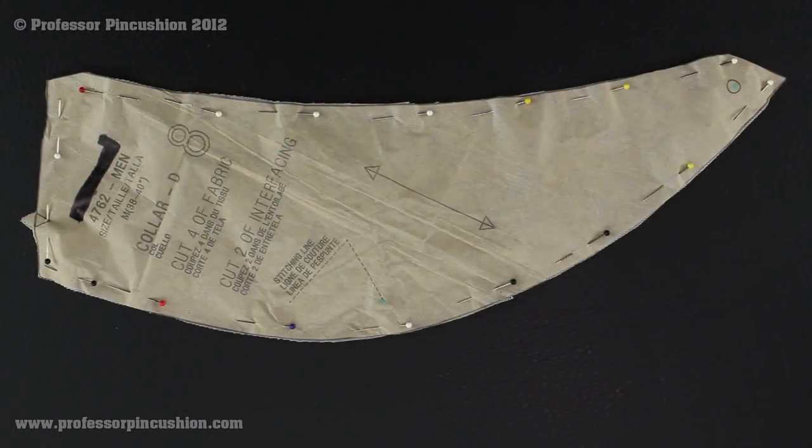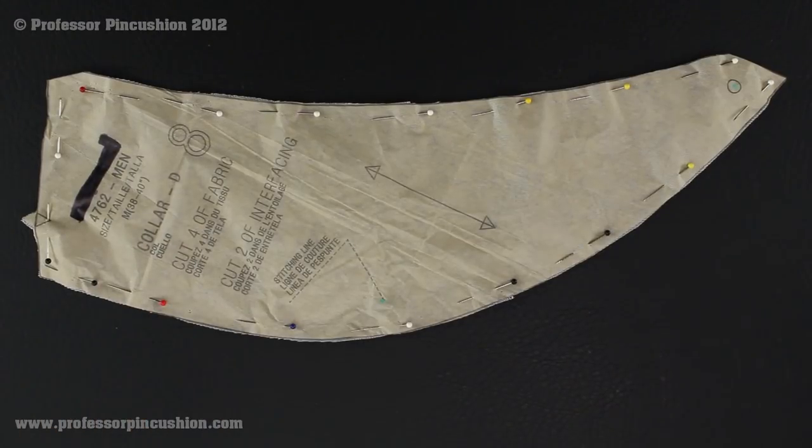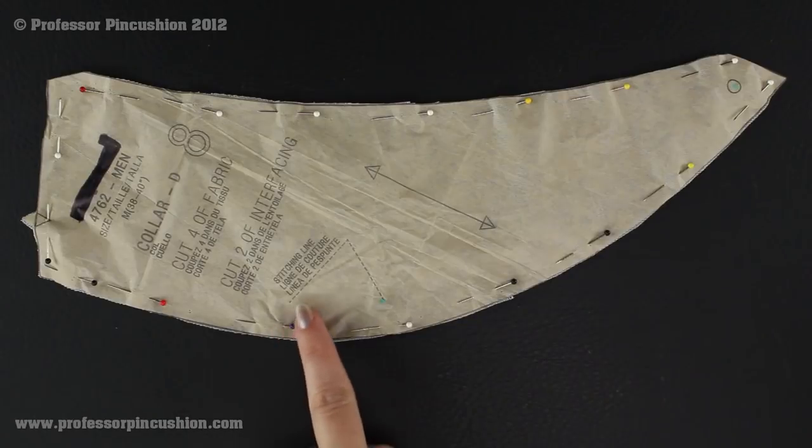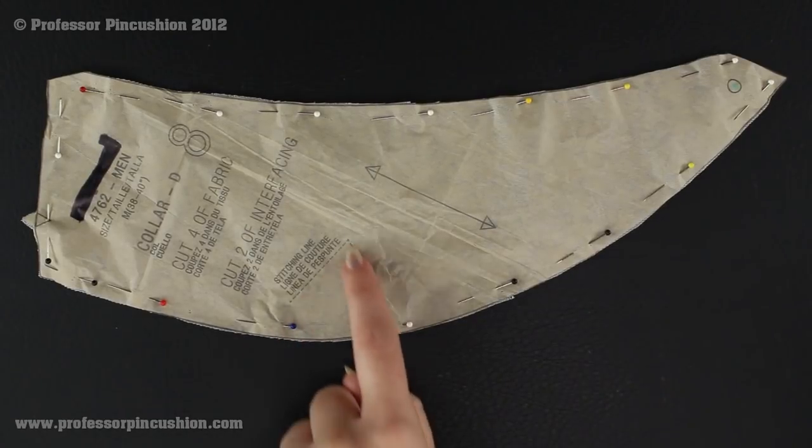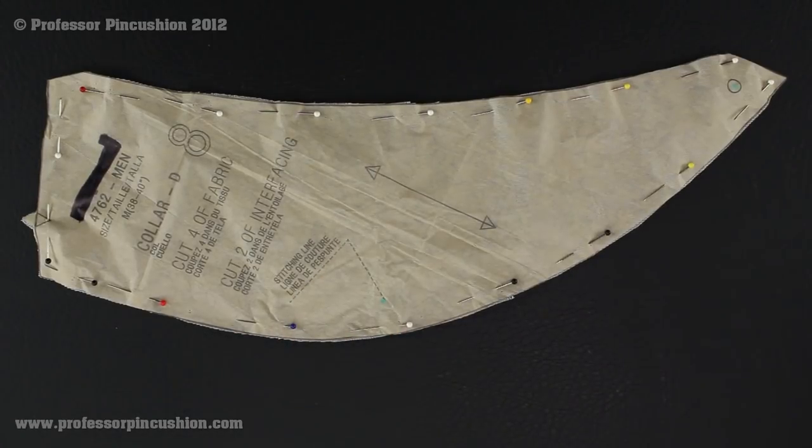The most common use of the tracing wheel is transferring your marks from your pattern pieces to your fabric pieces. And you can see right here on my pattern I have this line right here which needs to be transferred to my fabric piece. Now there's different methods for doing this but the quickest is using your tracing wheel and some transfer paper which I'll show you how to do.